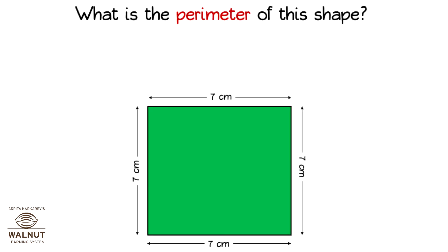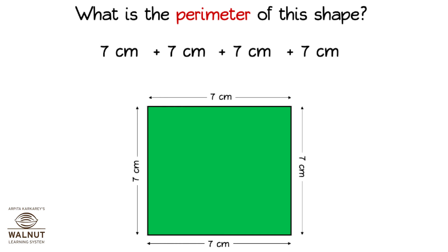What is the perimeter of this shape? We have to go around the shape and add up all the sides. Let us add the sides up. What do we get? 7 cm plus 7 cm plus 7 cm plus 7 cm is equal to 28 cm.